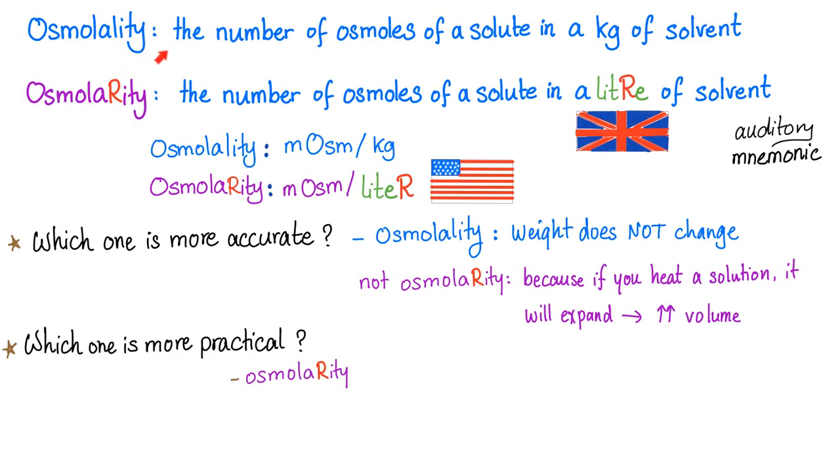So how about osmolarity? Osmolarity is per liter. Osmolality is per kilogram, but osmolarity is per liter. So osmolality, milliosmoles per kilogram. Osmolarity per liter. This mnemonic works for the British and for Americans. Which one is more accurate, osmolality or osmolarity? Osmolality is more accurate because the weight does not change. If I take 100 cc of water and then if I heat them, the volume will expand, but the weight will not change. And that's why the one that has per kilogram, which is osmolality, is more accurate. Which one is more practical? It's osmolarity.